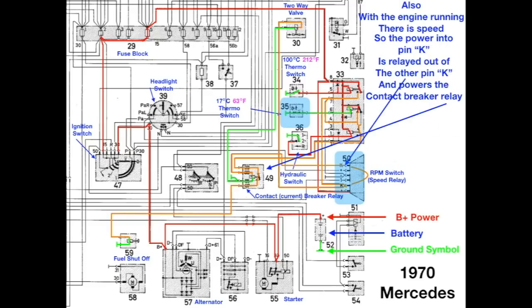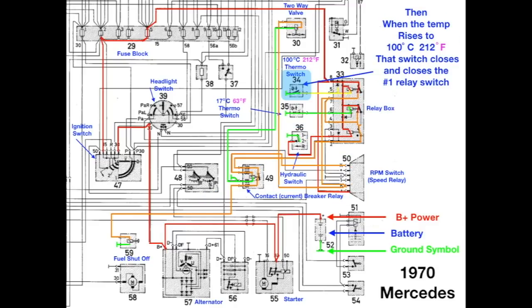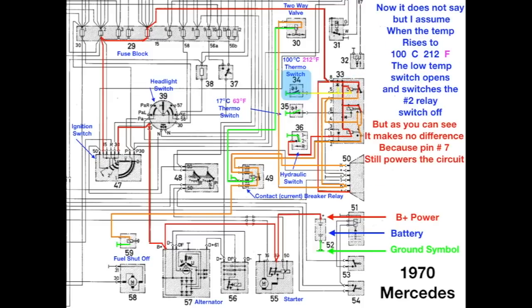Also, with the engine running, there is speed, so the power into pin K is relayed out of the other pin K, and it powers the contact breaker. This energizes the relay, closes the contact, and sends power to the fuel shutoff solenoid. When the temperature rises to a high temperature, the switch closes, and it closes the number one relay switch.